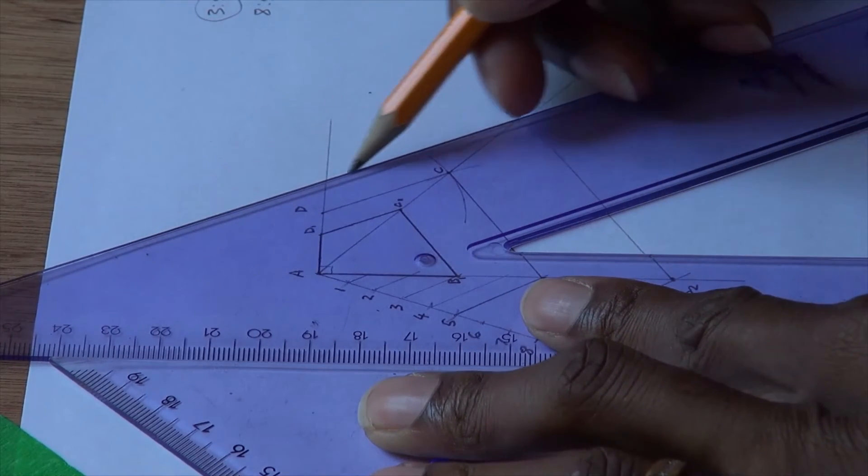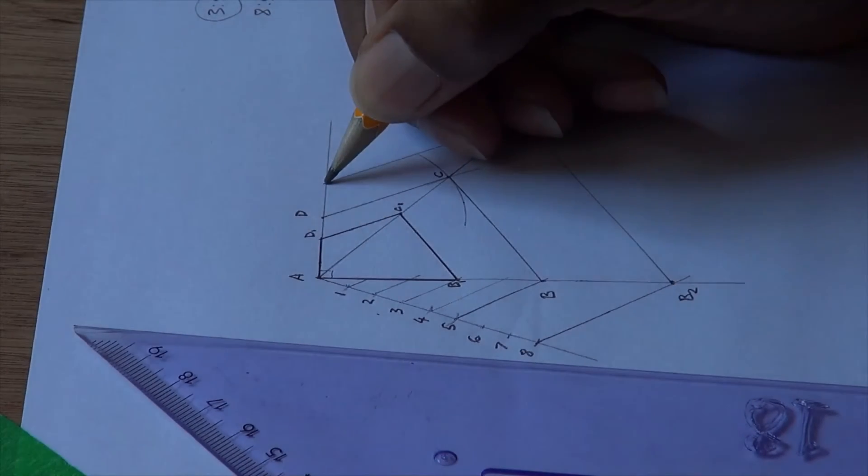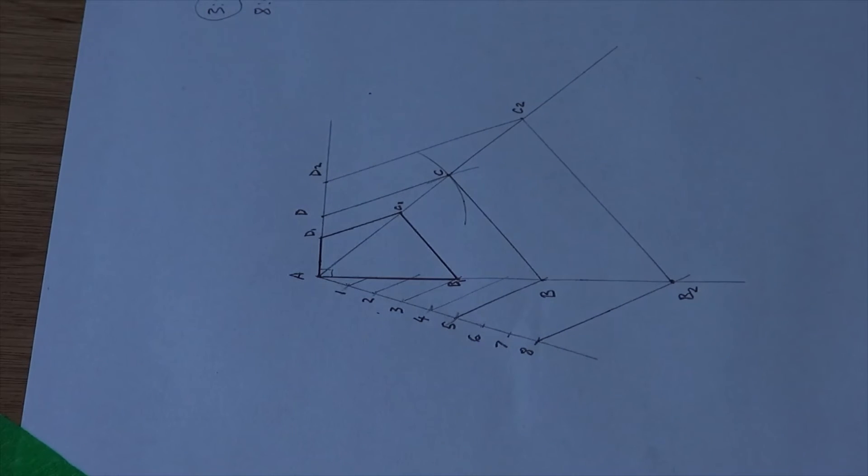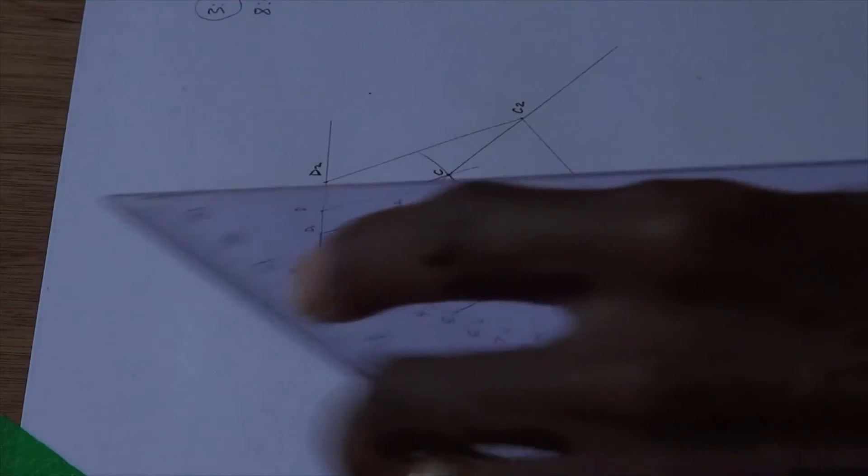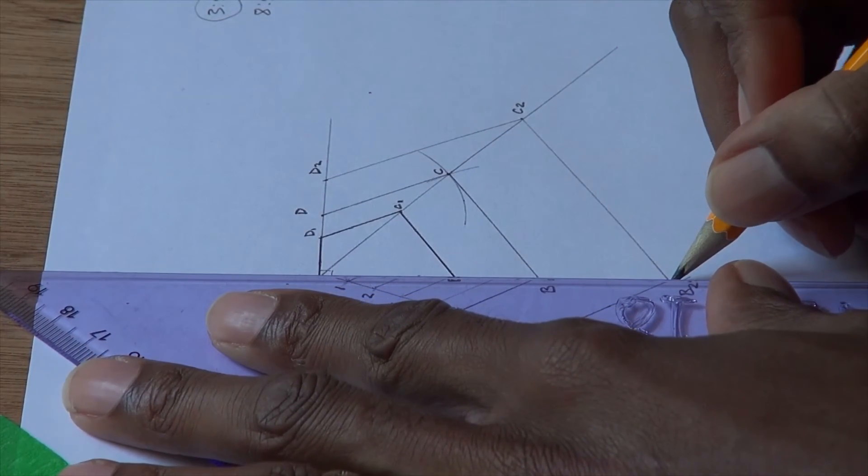Draw the final side. This point now becomes D2. Let's brighten the final figure. The final figure is from A to B2,